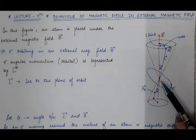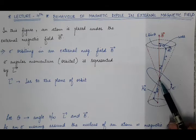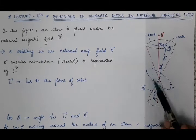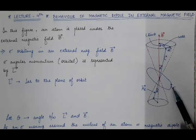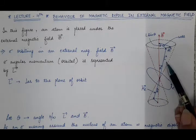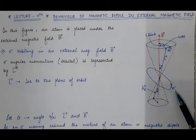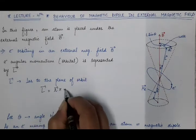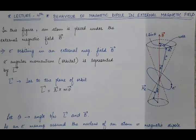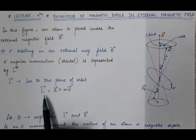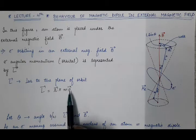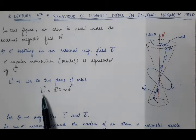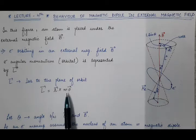Here we have an atom where the nucleus is present at the center and the electron is orbiting around the nucleus. The orbital angular momentum L vector is given by R cross MV, and the resultant vector in a cross product is always perpendicular to the plane containing these two vectors.